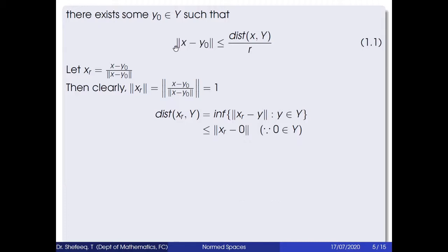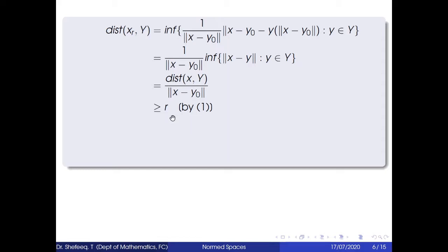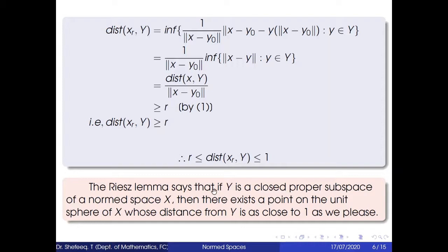Since ‖x − y₀‖ ≤ dist(x, Y)/r, we get dist(x, Y)/‖x − y₀‖ ≥ r. Therefore dist(x_r, Y) ≥ r. Combining both inequalities: r ≤ dist(x_r, Y) ≤ 1. So Riesz's Lemma says that if Y is a closed proper subspace of a normed space X, there exists a point on the unit sphere of X whose distance from Y is as close to 1 as we please.